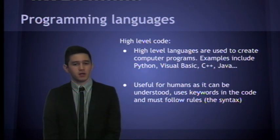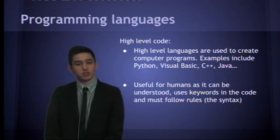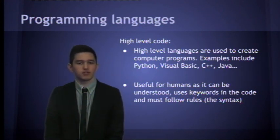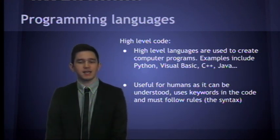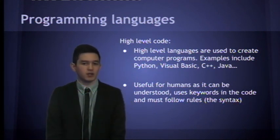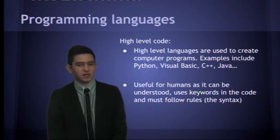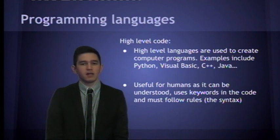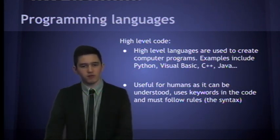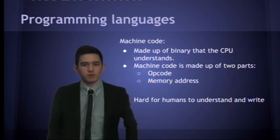High-level code. You would have come across this. That's code that is used to create programs. For example, Python, Visual Basic, C++, Java. Code that is understood by humans. You have certain syntax, certain keywords, and it's usually in English, or the type of English where you can easily type in keywords. It's very useful for us to use high-level programming language to make programs, and then we can use that to create our computer programs.